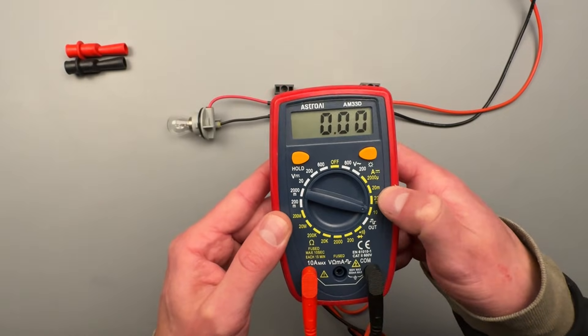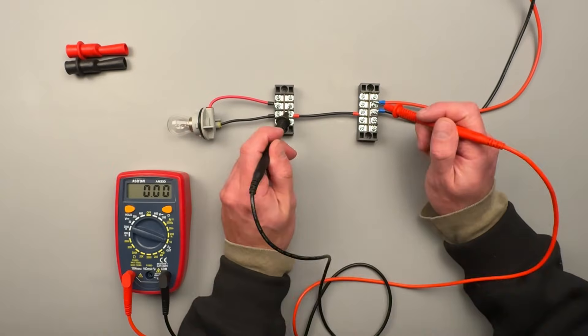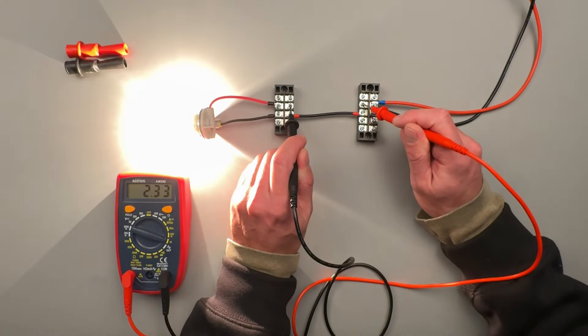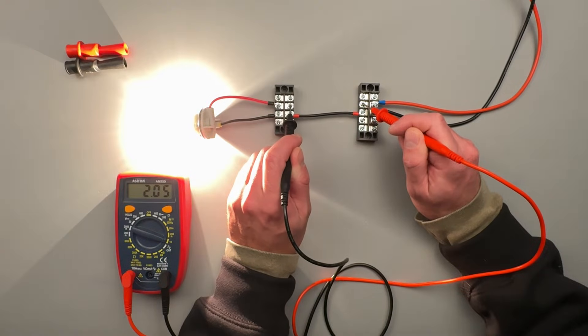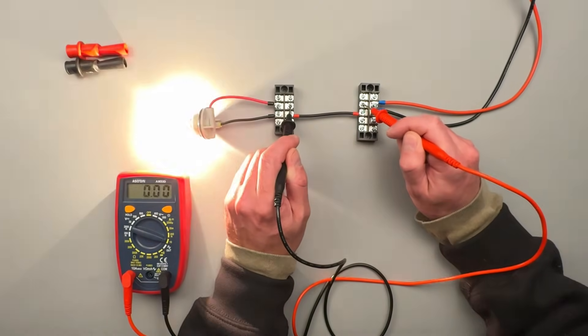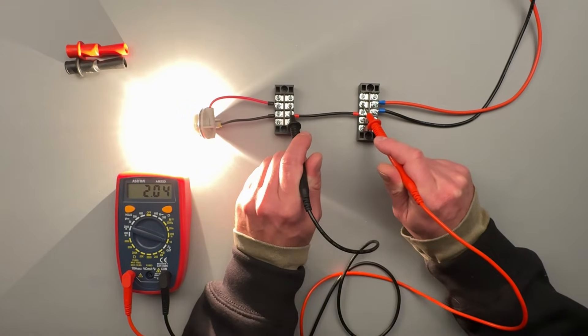But what we can do here is I can use my meter as a jumper cable to complete the circuit. See how there's no wire right there? And we're showing two amps of current being drawn.